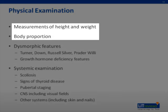Assessing body proportions and obtaining accurate height measurements is pivotal, as this can point to a skeletal dysplasia. Several measurements over time will give an indication of height velocity, which can also be plotted against age.